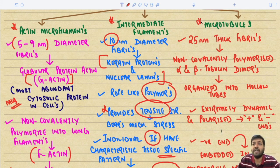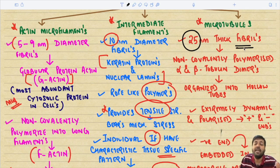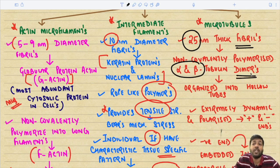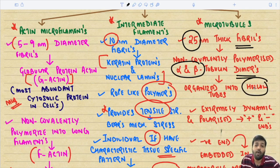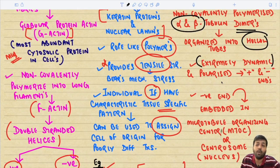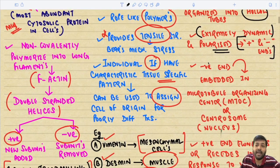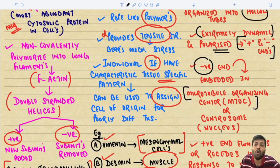Microtubules are the most dynamic cytoskeletal structures — 25-nanometer thick fibrils non-covalently polymerized from alpha and beta tubulin dimers, organized into hollow tubes. They are polarized with a positive end and a negative end. The negative end is embedded in the microtubule organizing center (MTOC) or centrosome, located near the nucleus.